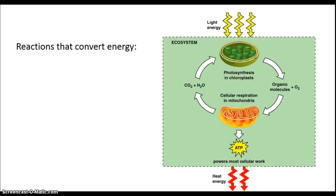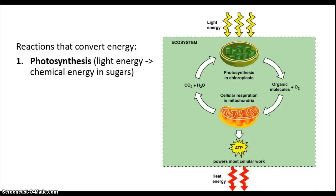There are a number of reactions that convert energy from one form to another in an ecosystem in various different organisms. In plants, for example, photosynthesis in the chloroplasts converts light energy into the energy of organic molecules, stored chemical energy in between carbon atoms in a sugar, for example.